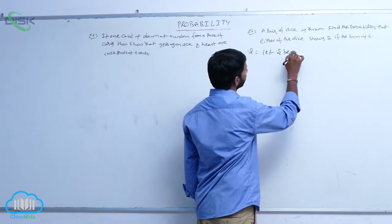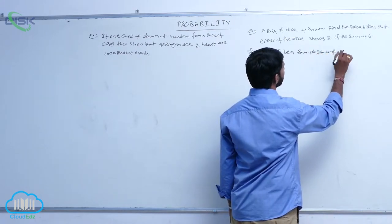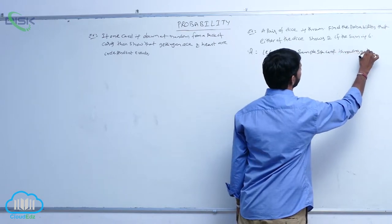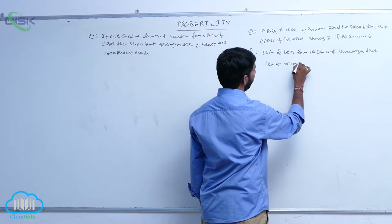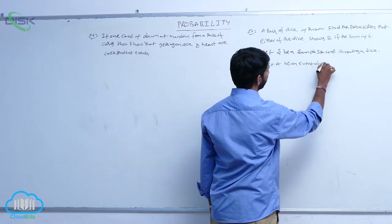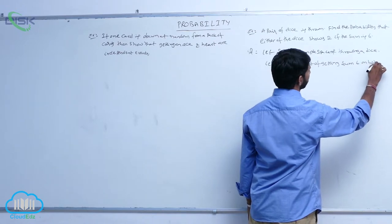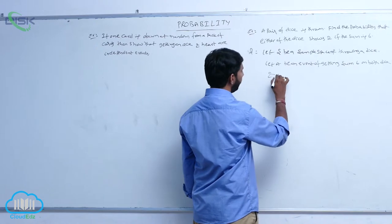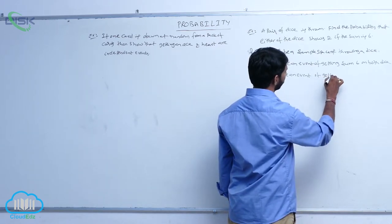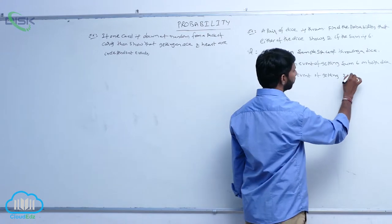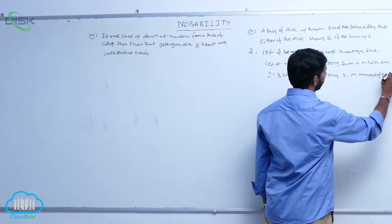Let S be the sample space of throwing a pair of dice. Let capital A be an event of getting a sum of 6 on both the dice, and B be an event of getting number 2 on any one of the dice.